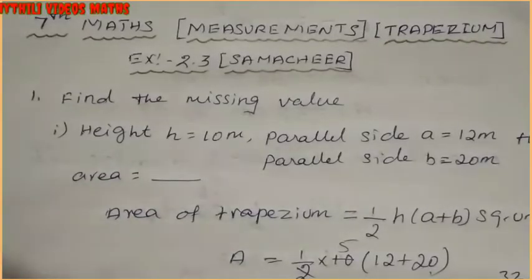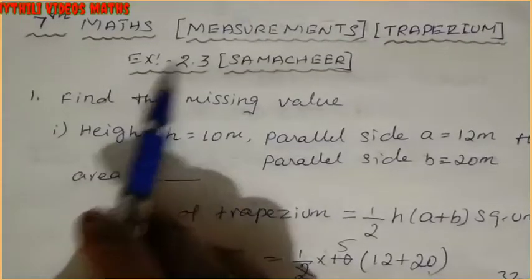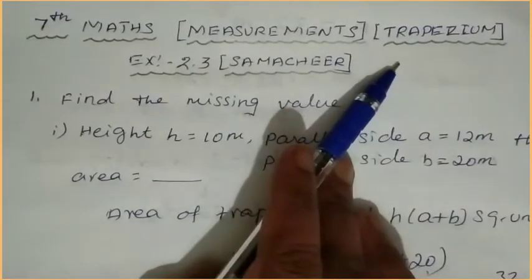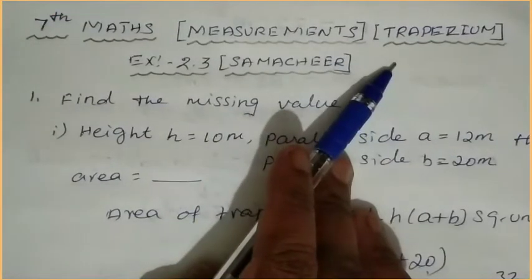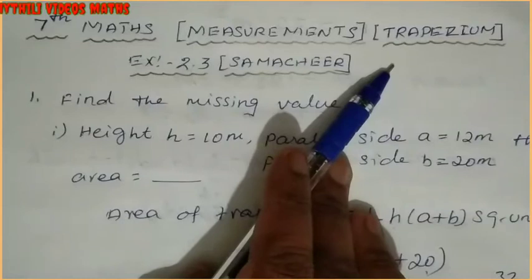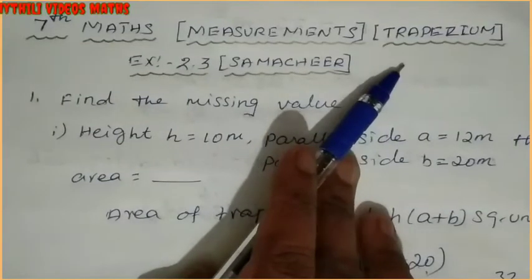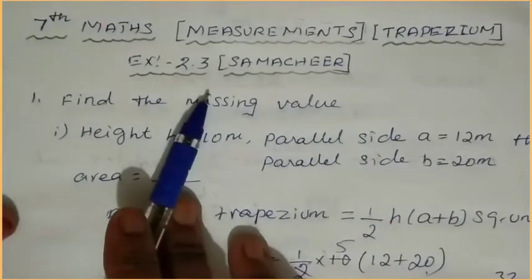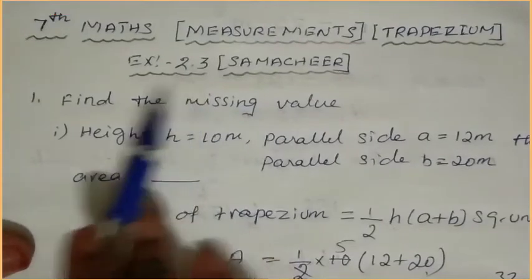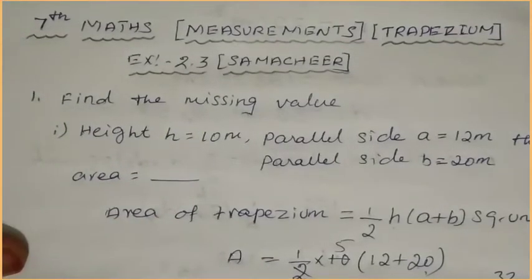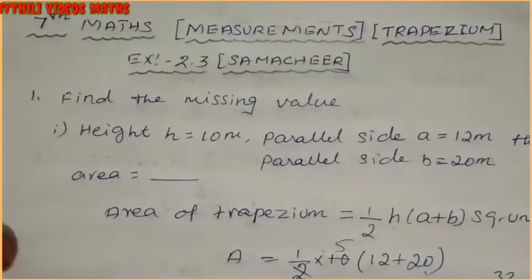Hi students, I am Maithli. This is 7th standard Maths, Measurement. We have already completed parallelogram and rhombus. Now we have to see trapezium — exercise 2.3. In this exercise, the first subdivision is fully completed. Now we have to see the second sum.